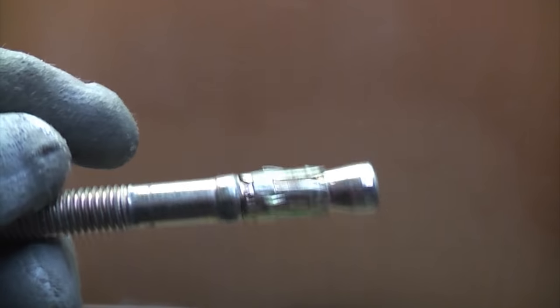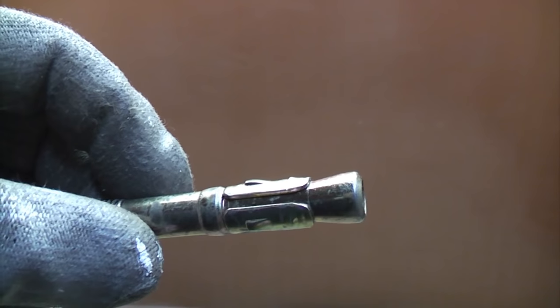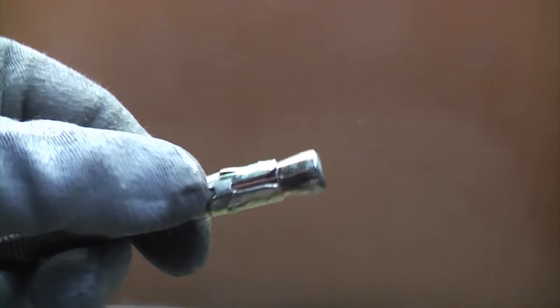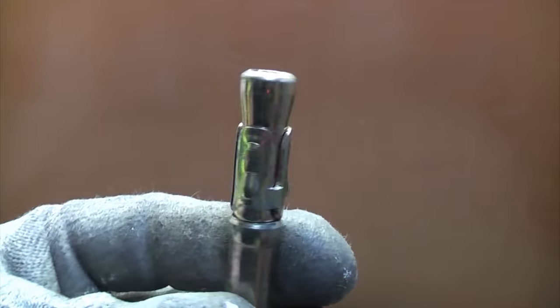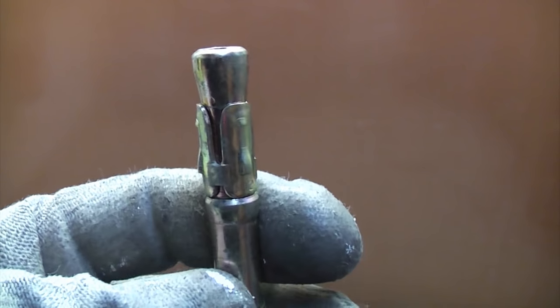One thing you can't do with these is use them for close to the edge fixing, so you can't use them at the edge of a piece of concrete. Because the actual end bit expands, if you try using them at the end they're just going to break the concrete.